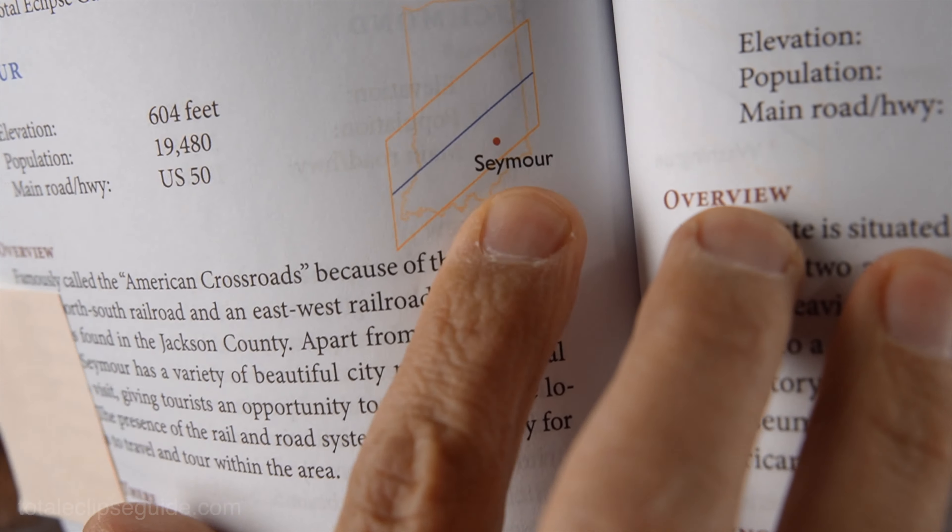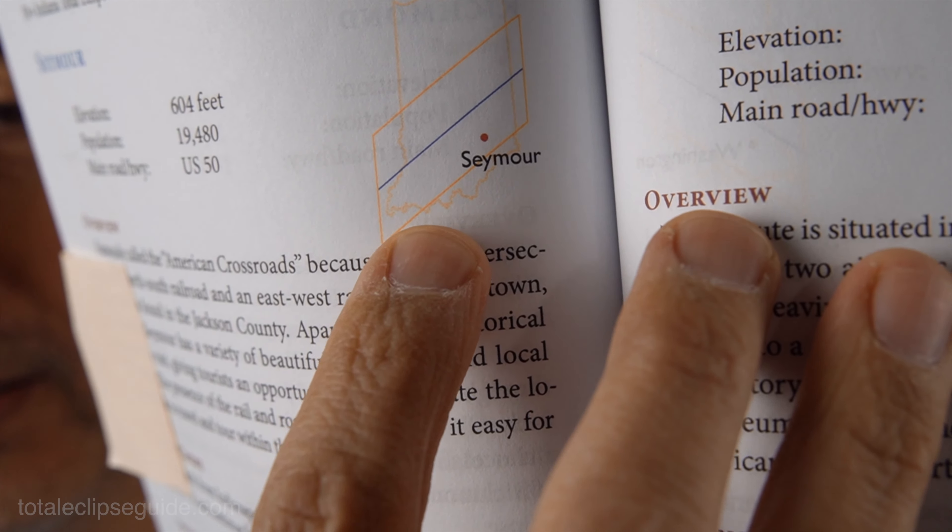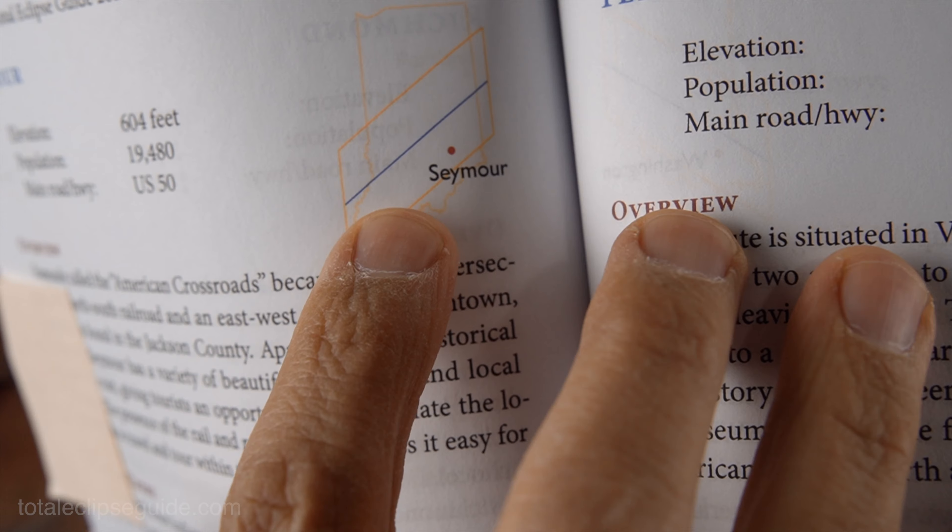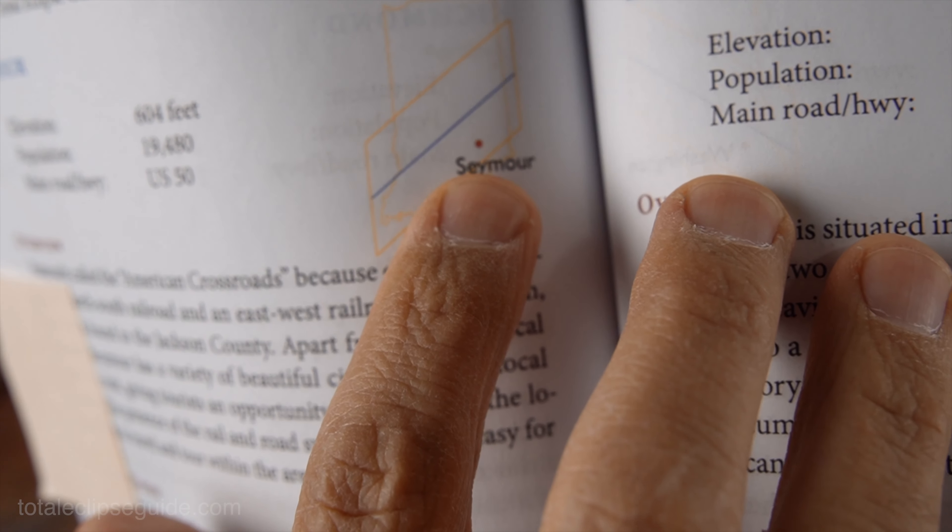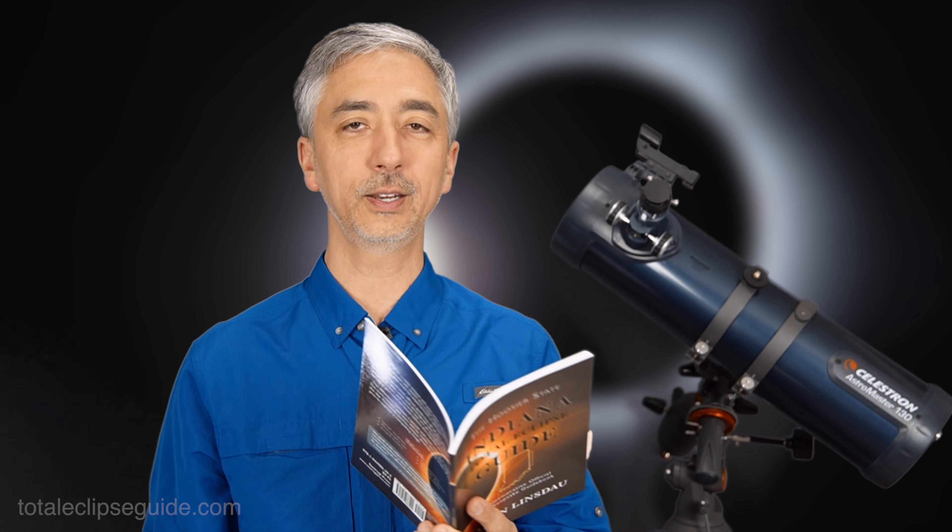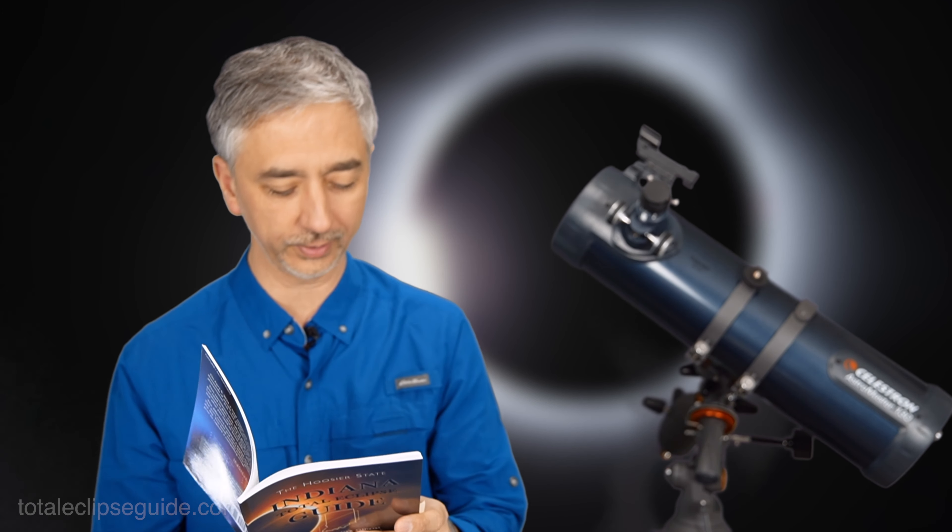You can see that the total eclipse path as highlighted by the yellow pathway with the blue line as center. Seymour is a very good location. Seymour will experience a three minute and nine second totality.